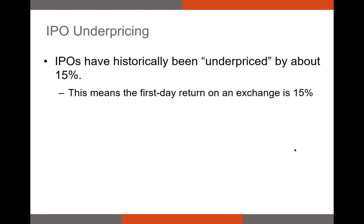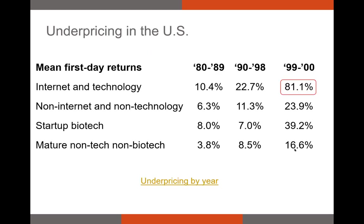This large one-day return phenomenon is referred to as IPO underpricing, because these shares are clearly priced below the price the market would be willing to pay for them. However, the amount of underpricing is not consistent across IPOs. I took this data from Jay Ritter, who is arguably the world's leading academic authority on IPOs.